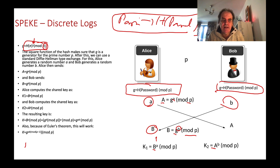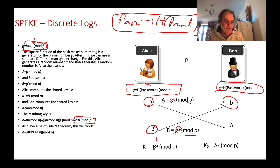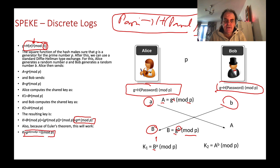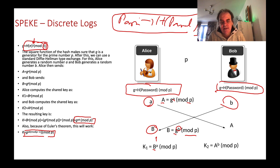What we should end up with is g to the power of a*b mod p, and that gives us our shared key that both Bob and Alice will be able to use. Using Euler's theorem, we can also calculate it as a*b mod (p-1) as the exponent of g, then take mod p.